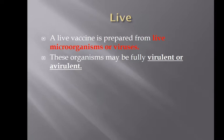A live vaccine is prepared from a live microorganism or virus. The organisms may be fully virulent or may be avirulent. A virus that is virulent means that it is actively trying to infect you. Something that is avirulent is something that isn't as active, isn't as infective.